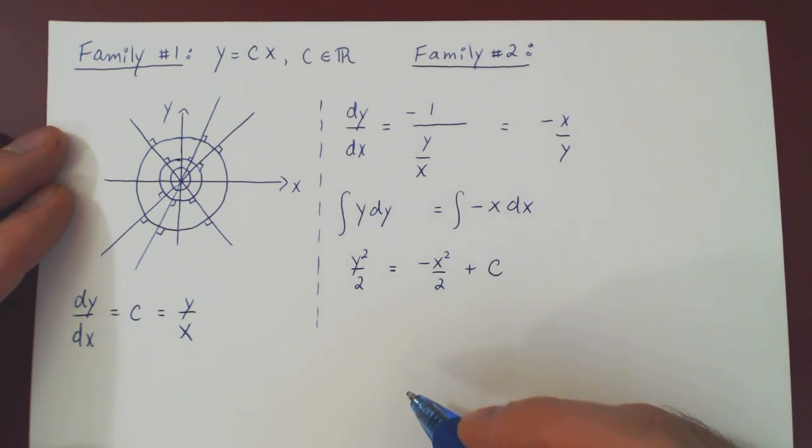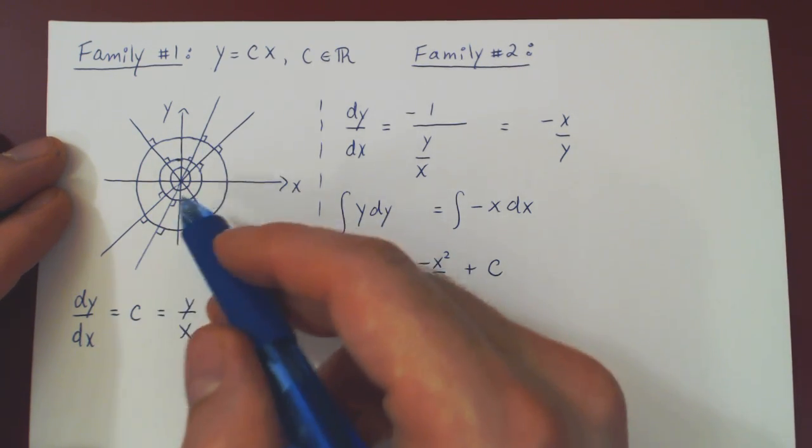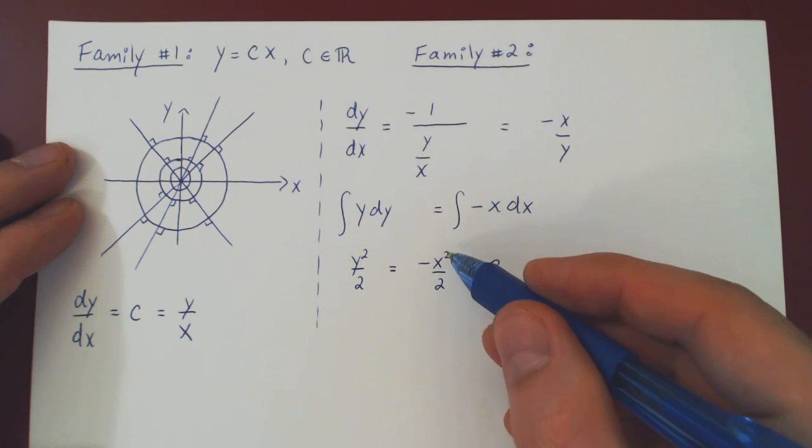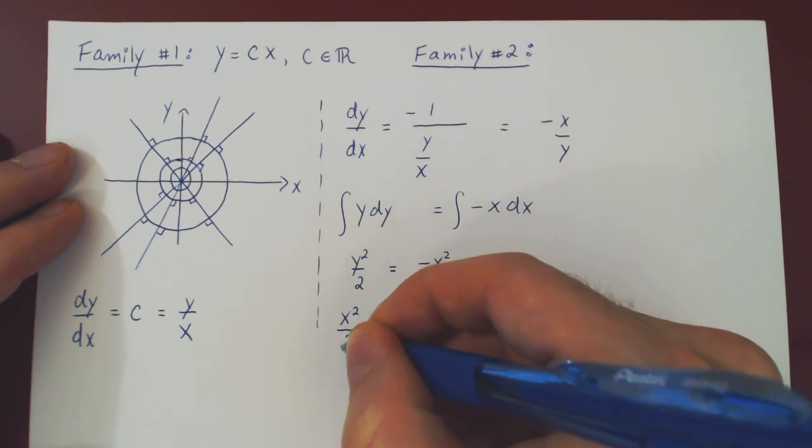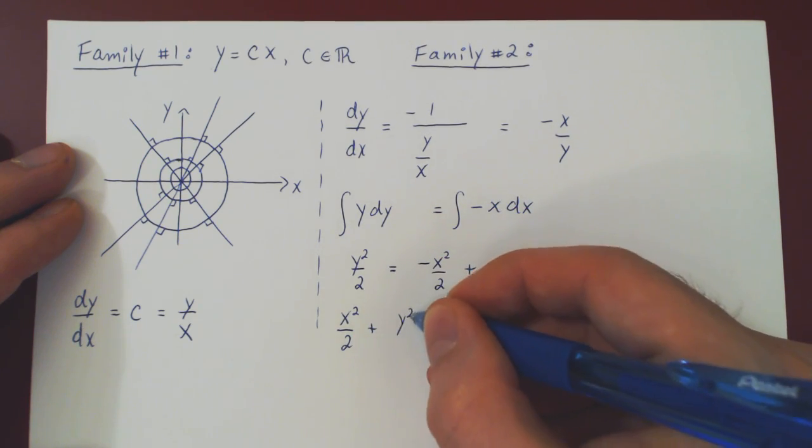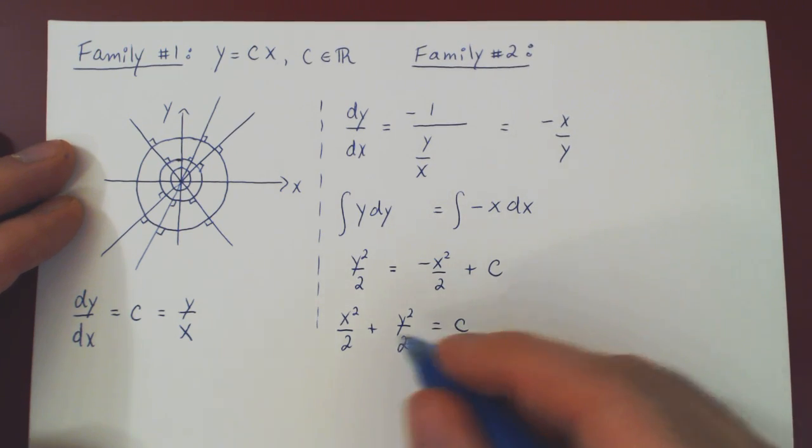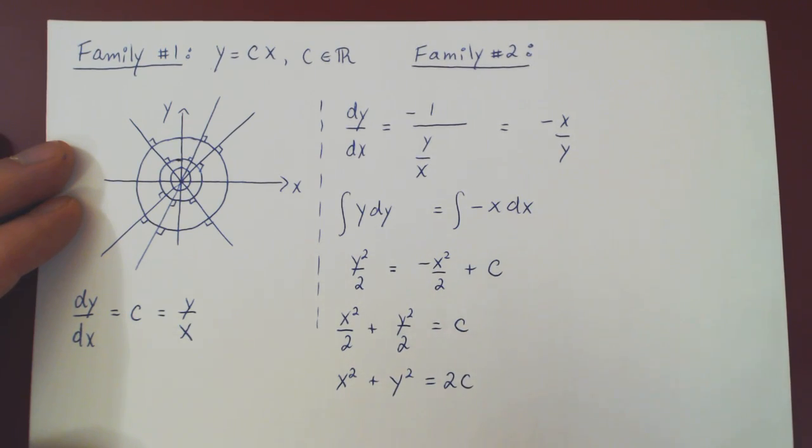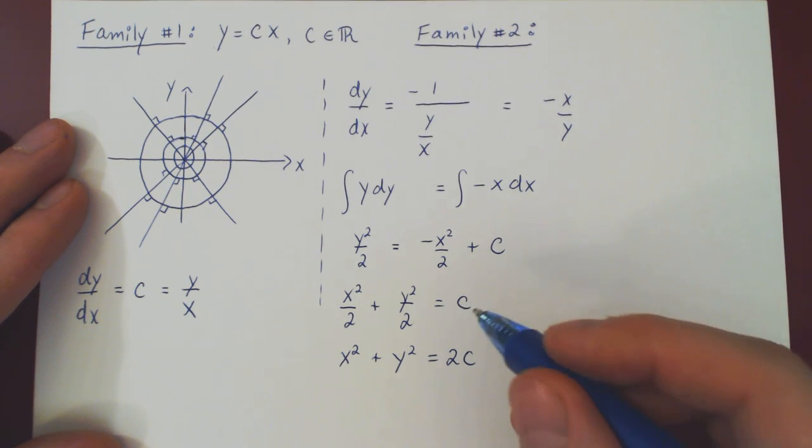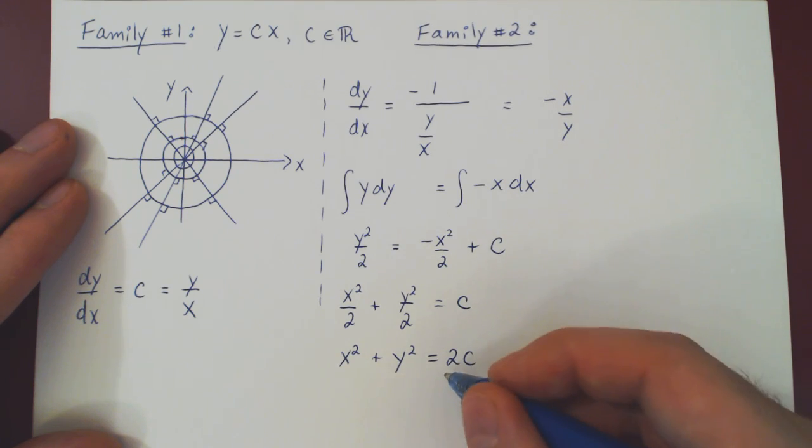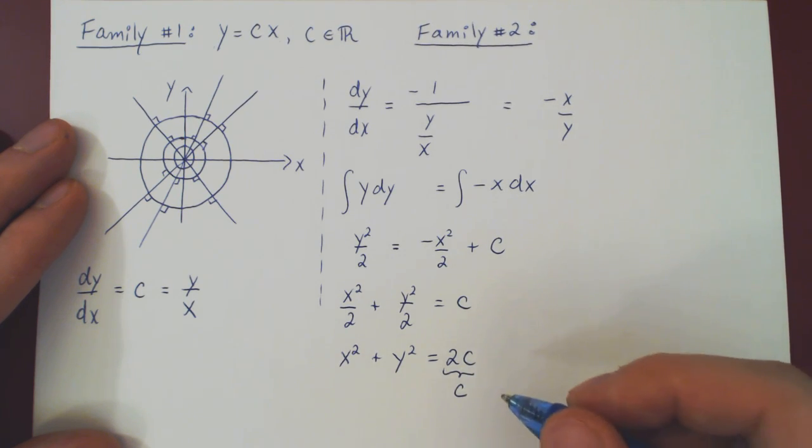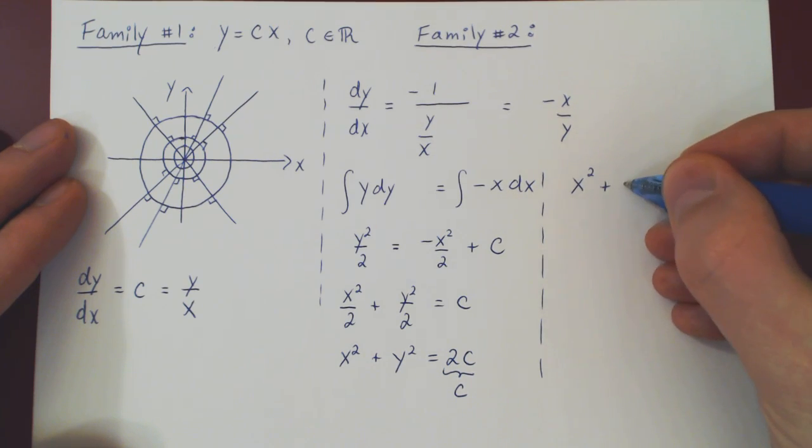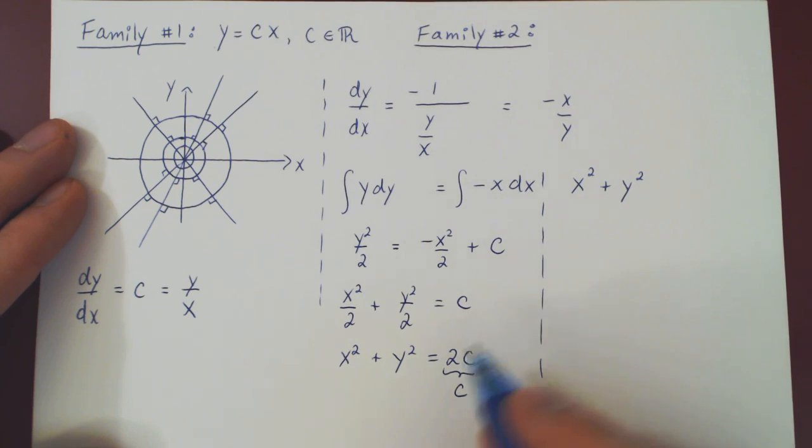Let me just now rearrange this to make it look more familiar. We were expecting circles centered about the origin. Well, let's prove that this is actually the case. Let me add x squared over 2 on both sides. So, we have x squared over 2 plus y squared over 2 equals c. I can multiply across by 2, and I get that x squared plus y squared equals 2c. But if you think about it, c is nothing but an arbitrary constant. Since c is an arbitrary constant, so is 2c. So, I can replace 2c by simply c, as it is an arbitrary constant. And then we have the equation x squared plus y squared equals some constant.